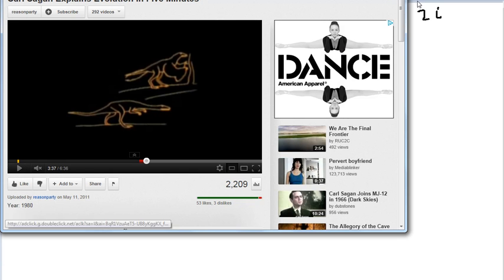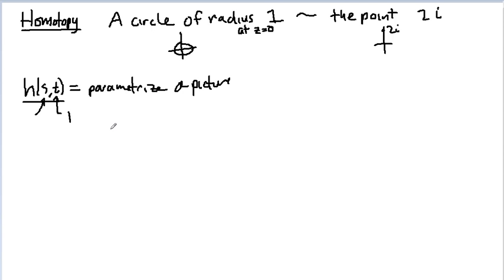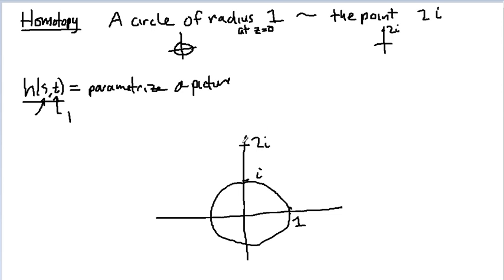So let's just run through what that might look like over here. So if I start with a circle of radius 1, it goes through i, it goes through 1. I can show you this homotopic to this point at 2i. So here, this is my picture where s equals 0. And this might be t equals 0 up to t equals 2 pi, for instance.